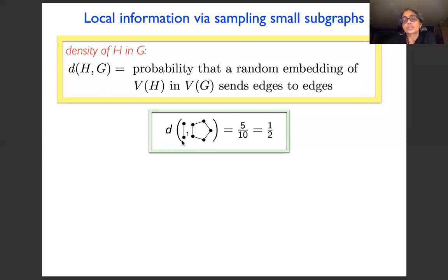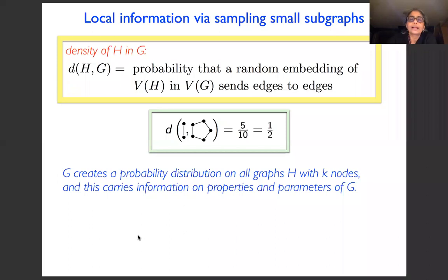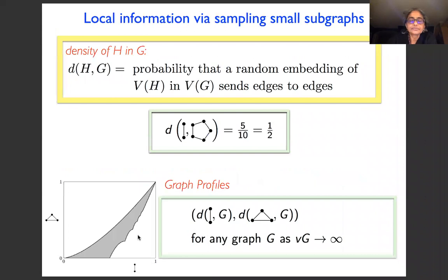This is called subgraph density, and these densities carry valuable information. If you fix all graphs H with K vertices, then a given graph creates a probability distribution on these small graphs, and they carry important information about properties and parameters of the graph. Another thing people study is graph profiles — taking a tuple of densities. In my example I chose two densities, but you could choose any finite number, usually a small number.